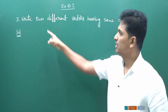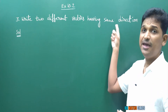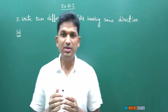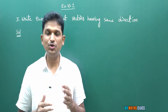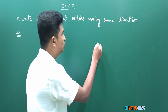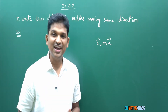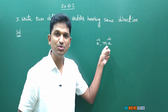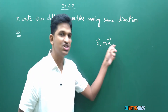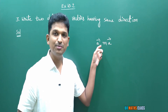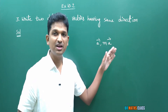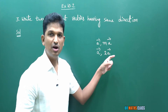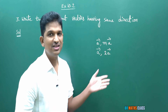Question 3: write two different vectors having the same direction. If you know scalar multiplication of a vector, you can answer this very easily. In scalar multiplication, if m is positive, the direction of m·a bar is along the direction of a bar. So a bar and m·a bar will have the same direction when m is positive. Since 2 is positive, 2·a bar is also along the direction of a bar, so a bar and 2·a bar are in the same direction.